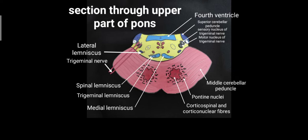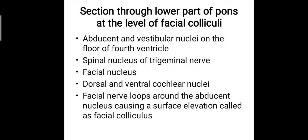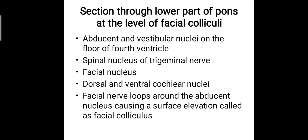Two sections are taken — one through the upper part and one through the lower part of the pons. If a section is taken through the lower part of the pons at the level of the facial colliculi, these features are visible: the abducent and vestibular nuclei on the floor of the fourth ventricle, the spinal nucleus of the trigeminal nerve, the facial nucleus, the dorsal and ventral cochlear nuclei. The facial nerve loops around the abducent nucleus, which is the reason for the elevation called the facial colliculus.